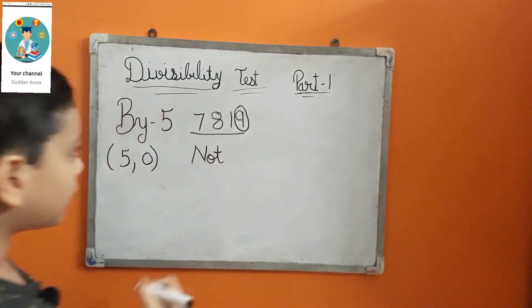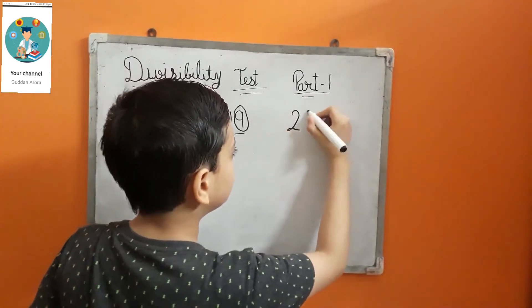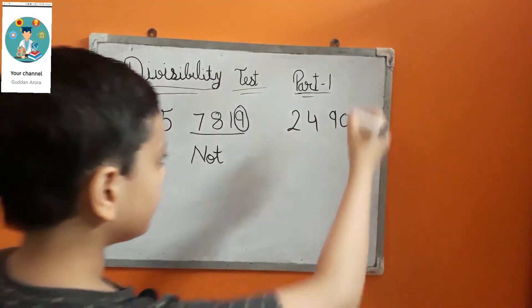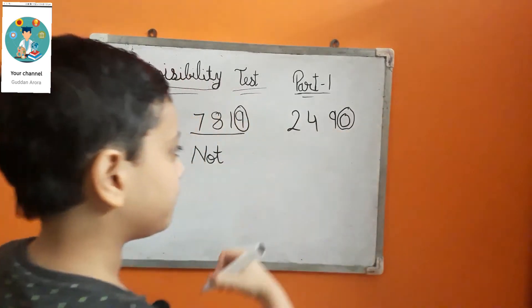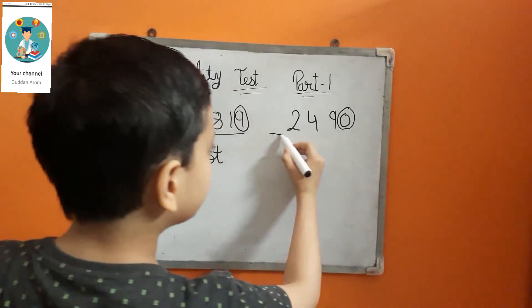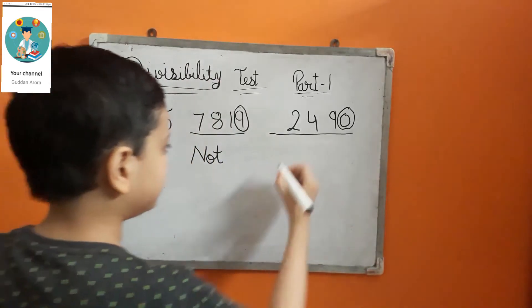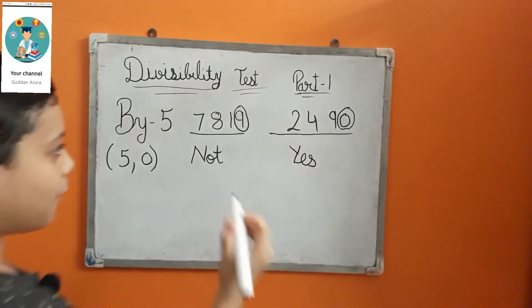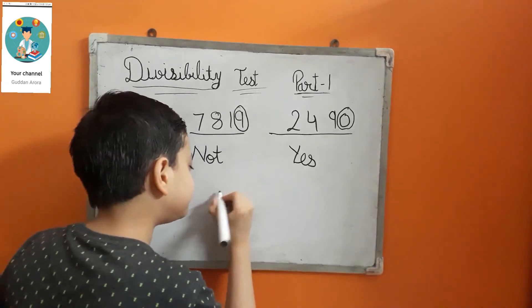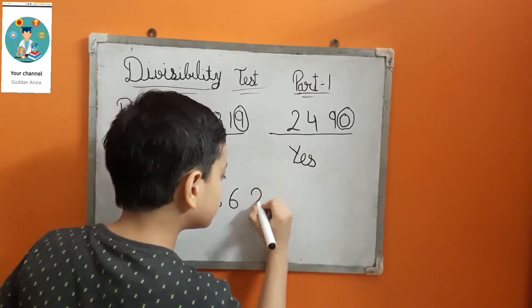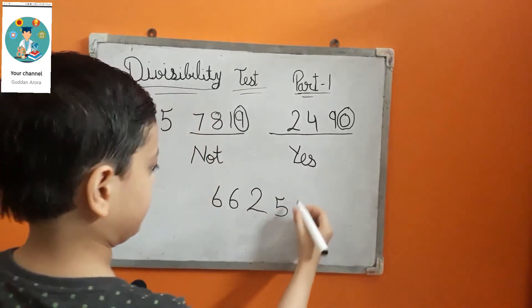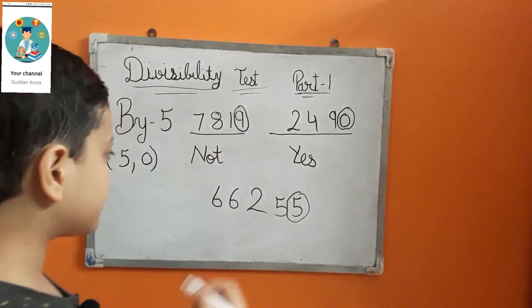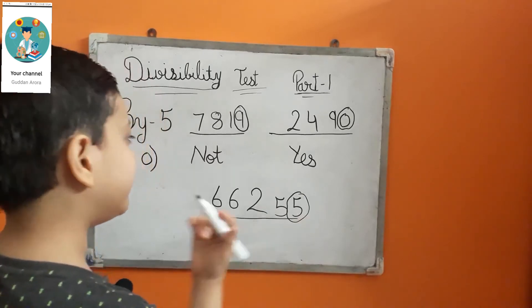Now I am taking another example. In this number the ones digit is 5, so this number is also divisible by 5.